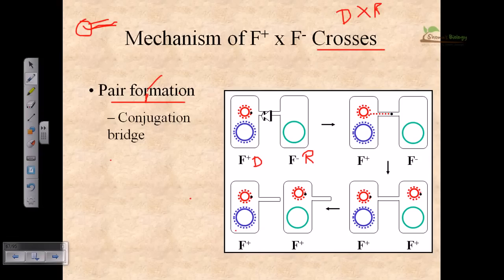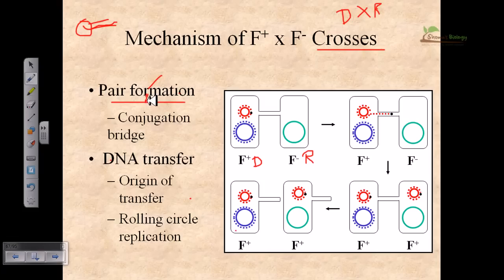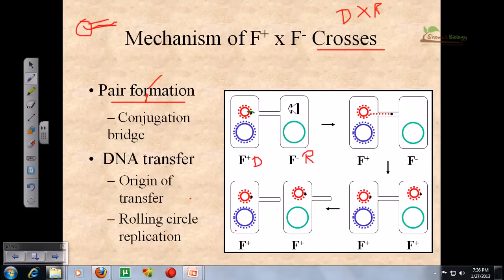Now after the pair formation, the second step comes in which is called the DNA transfer. Now in this DNA transfer stage, what happens is there is a special place here which is called the origin of transfer, from where the DNA strand is cut and then the DNA strand is taken up into another cell with help of the protein called relaxase. If you want to see the mechanism in detailed manner, you can go and watch other videos on my YouTube channel.